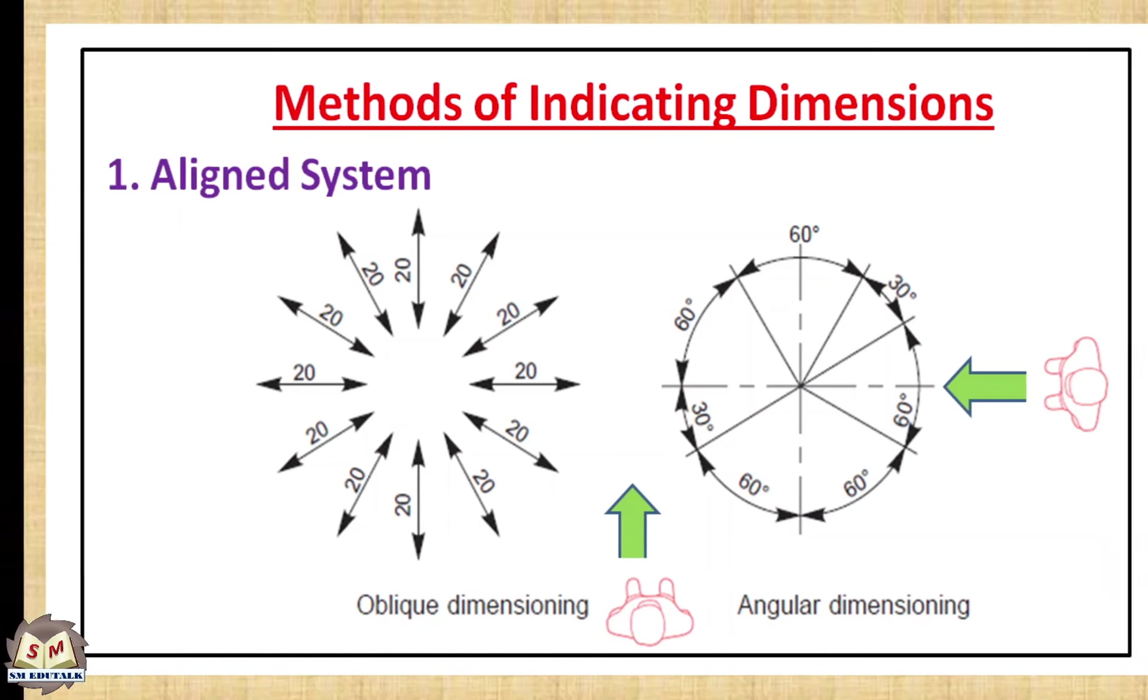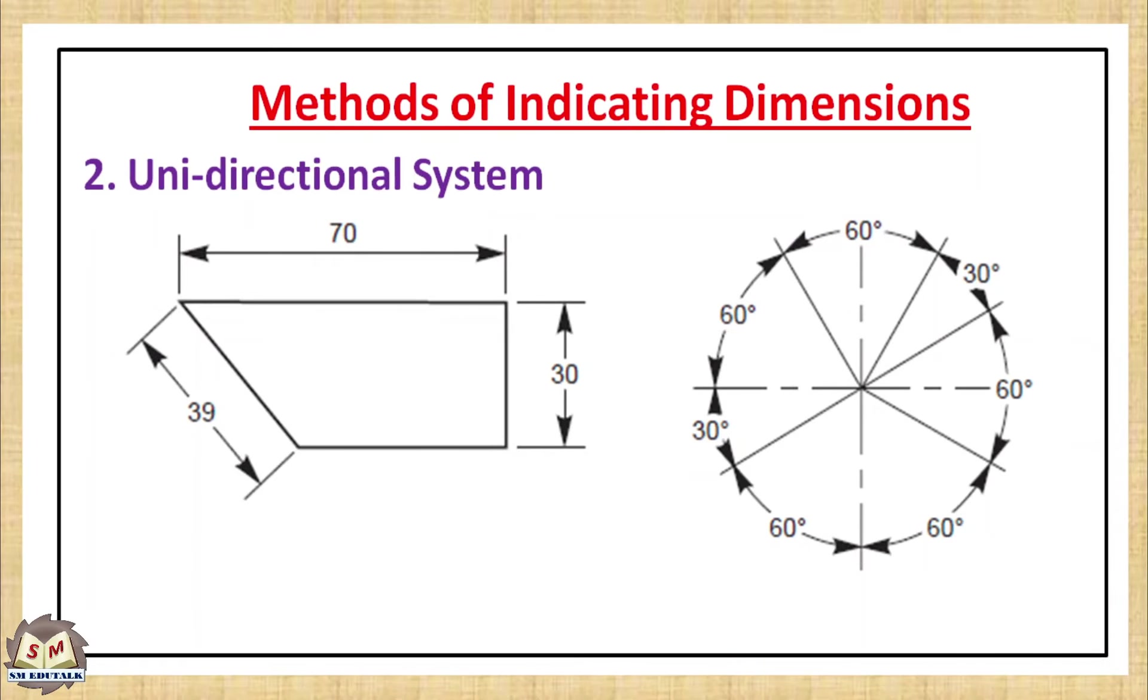What is unidirectional system? Here dimension text should be always horizontal irrespective of the orientation of the dimension line. Dimension text should be indicated so that they can be read from the bottom of the drawing only. You can't take it from the right.